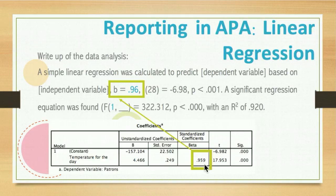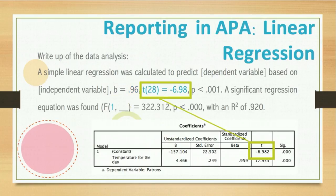In this situation, beta is 0.959, so we round that up to 0.96. We write B equals 0.96, insert a comma, and then we will report the t-test.